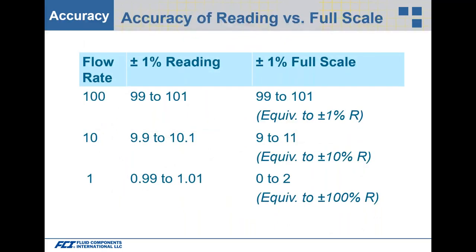Comparing ±1% of reading with ±1% of full scale: at maximum flow of 100, both give 99 to 101 — they're the same. But at low flow of 10, ±1% of reading gives 9.9 to 10.1, whereas ±1% of full scale gives an allowed error of 9 to 11. At 1 normal cubic meter per hour, ±1% of reading gives 0.99 to 1.01, but ±1% of full scale allows anywhere from 0 to 2. That full scale error really affects the allowable error at low flow.